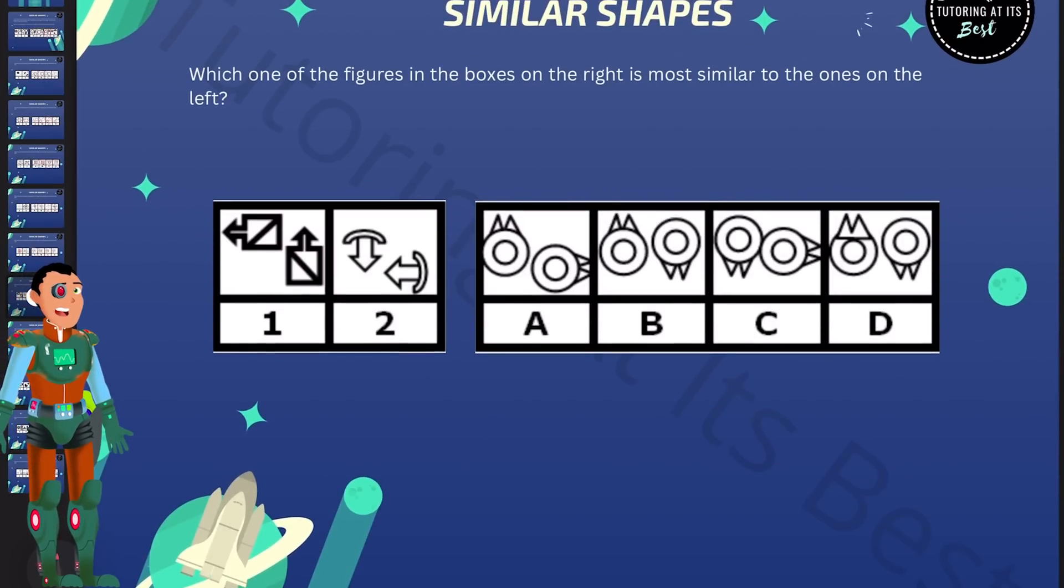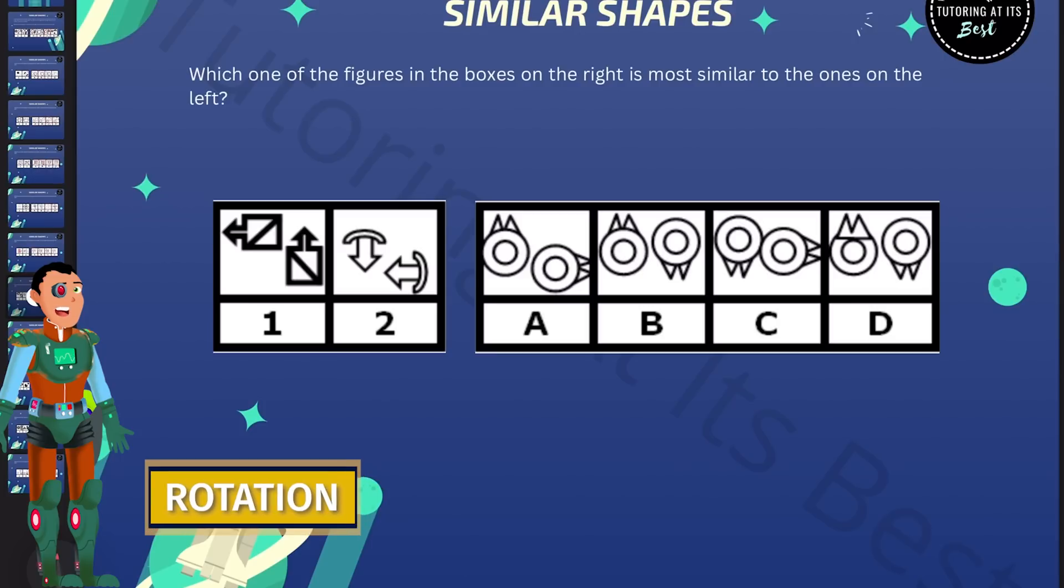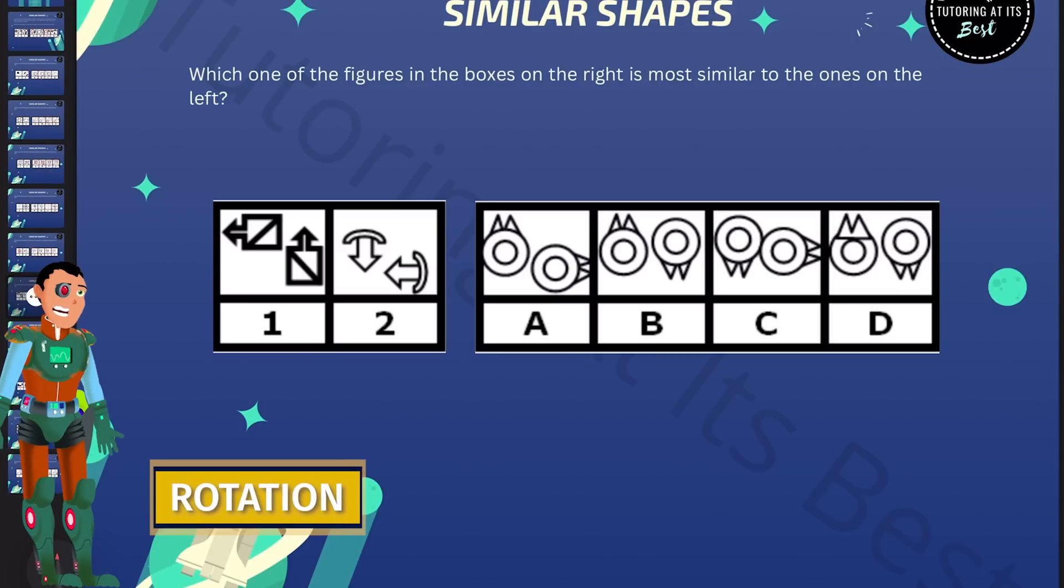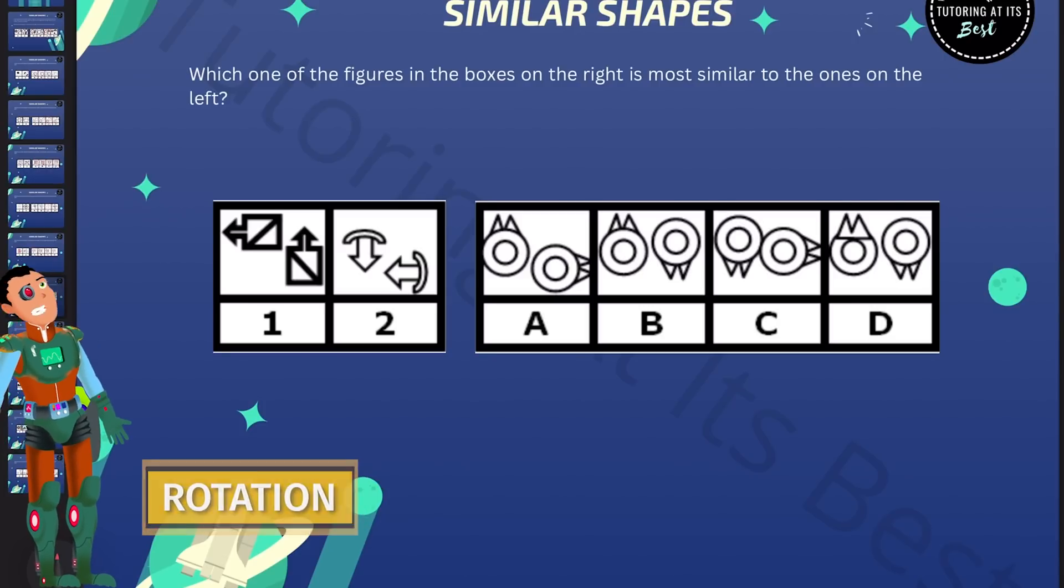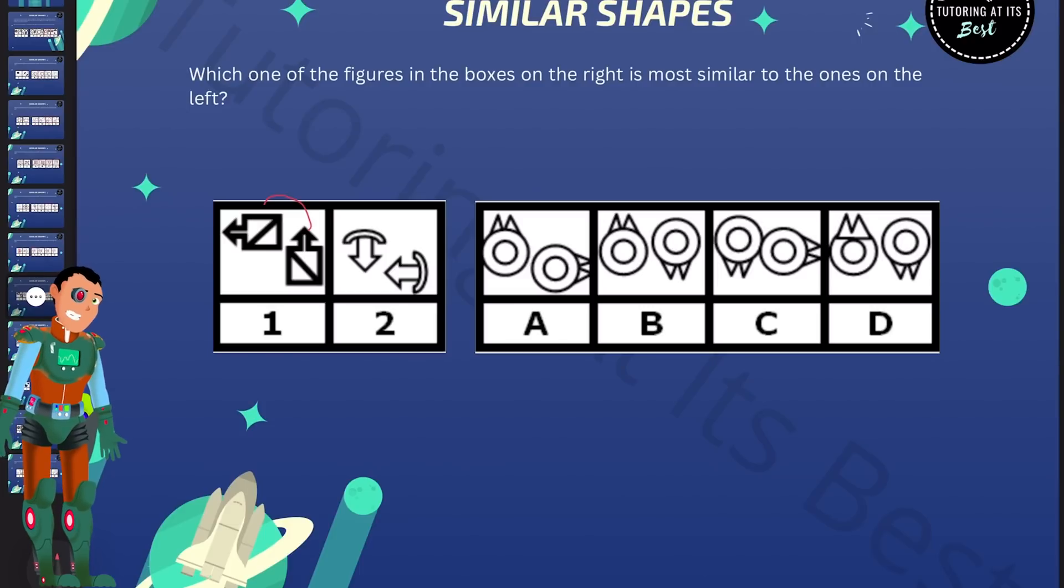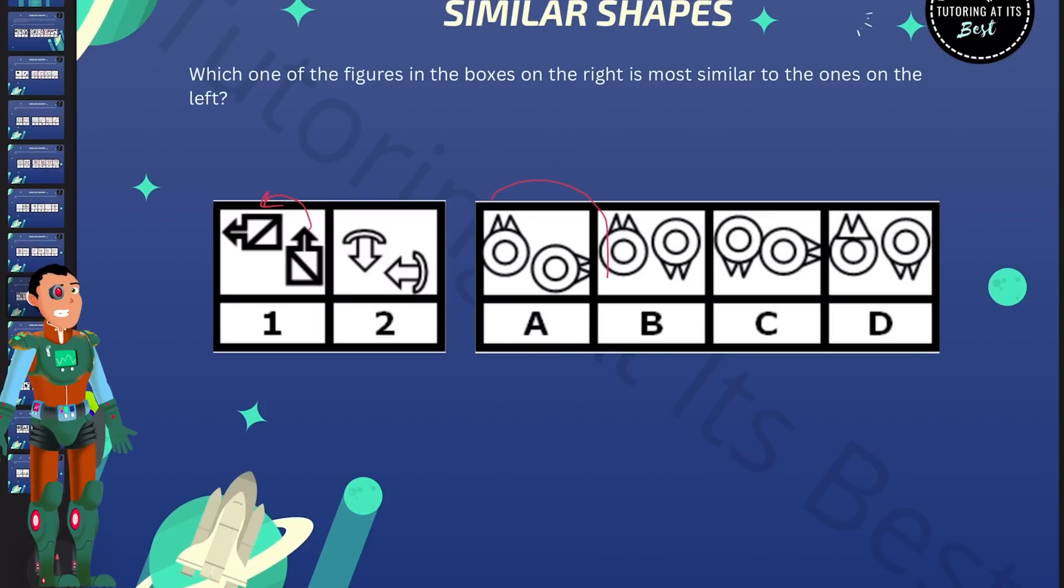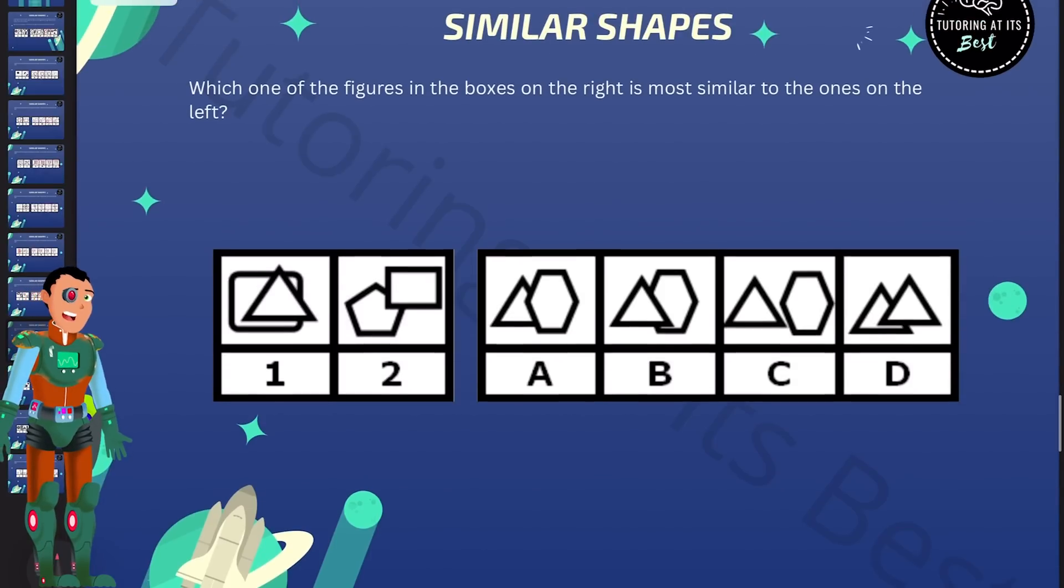So what do we notice here? Well, figures one and two each have two shapes. The right hand shape looks as if it's a one quarter anti-clockwise rotation of the shape on the left. If we take a look at boxes A, B, C and D, it looks as if A is the only one that does this going over to the left. Beautiful. Over to the next question.